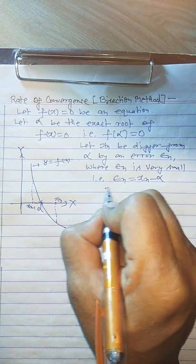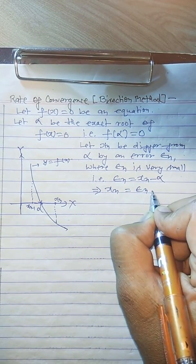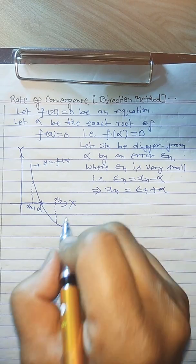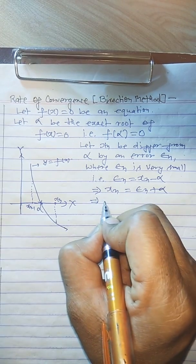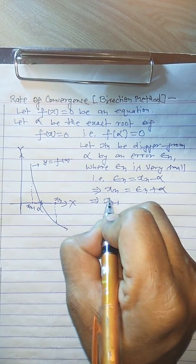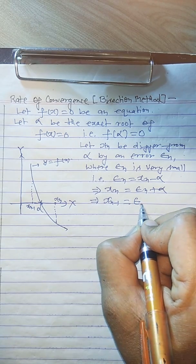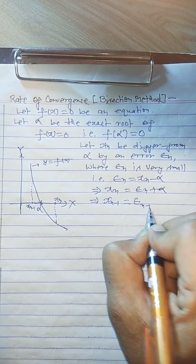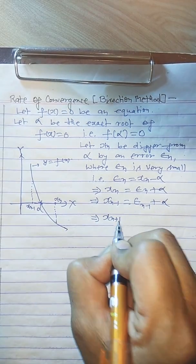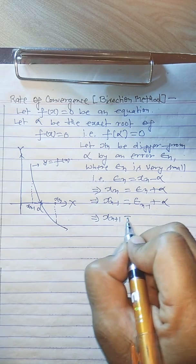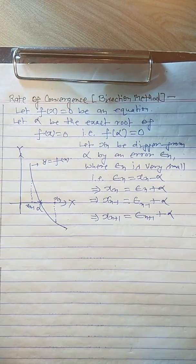Equivalently, we can write x_n = epsilon_n + alpha. In similar fashion, we can write x_{n-1} = epsilon_{n-1} + alpha, and x_{n+1} = epsilon_{n+1} + alpha.